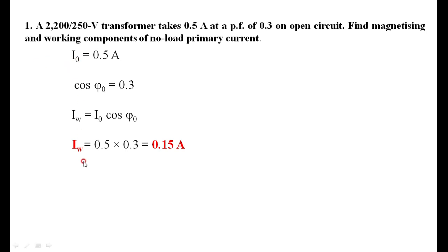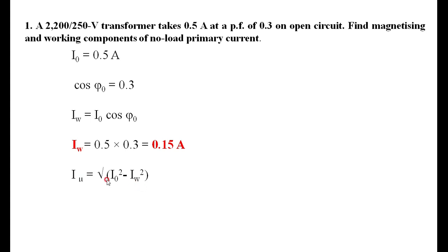We know the value of I0 and IW, so I-mu can be calculated. One way is using I-mu equals the square root of I0 squared minus IW squared. Alternatively, find phi0 as cos inverse of 0.3, then compute I0 sin phi0. Substituting I0 as 0.5 and IW as 0.15, I-mu equals 0.476 amperes, which is the magnetizing component of the no-load current.